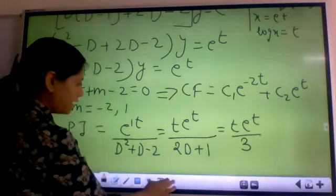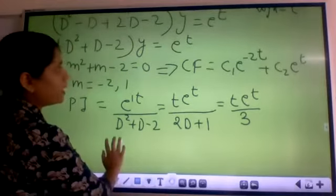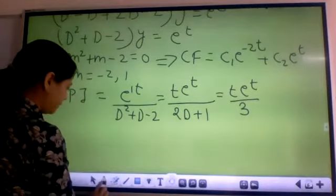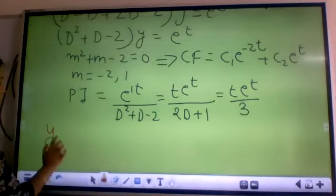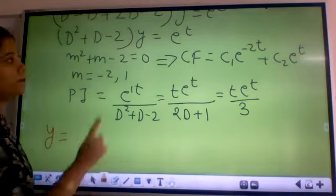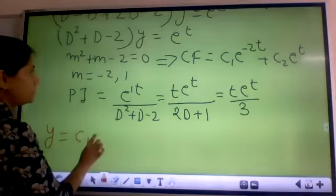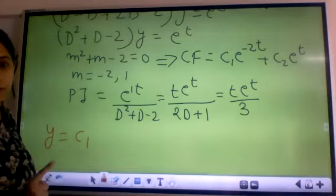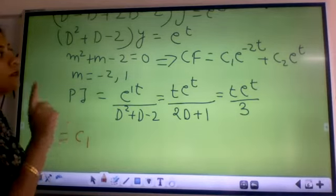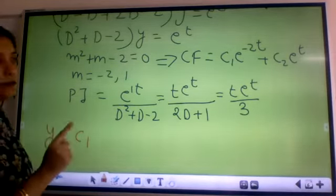Now how I will write the answer? My answer is CF plus PI. So I will write y is equal to - my final answer is equal to CF plus PI. CF is c₁ e^(-2t). Now what is e^t? x.